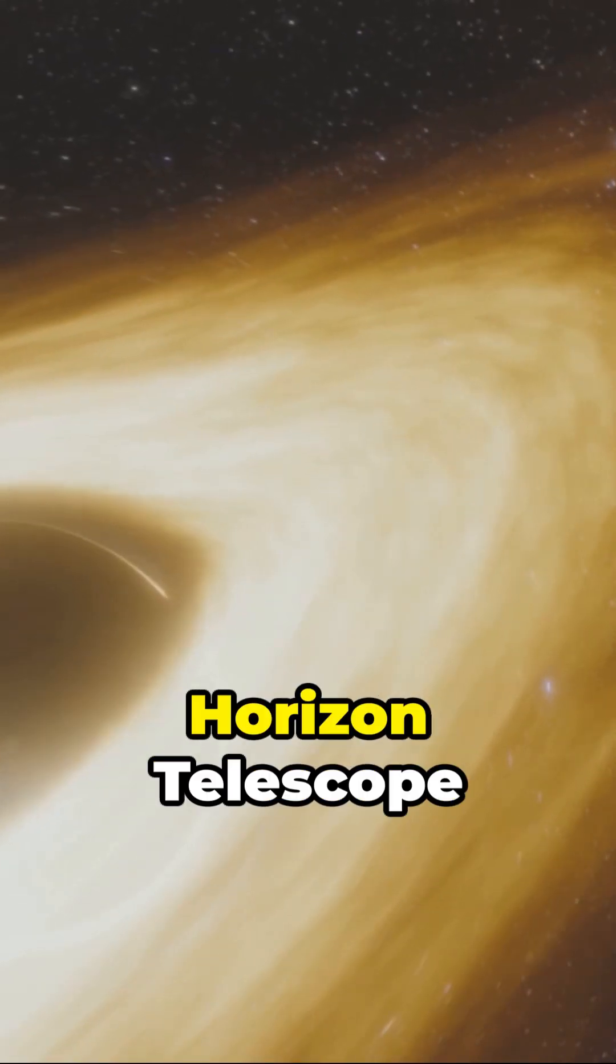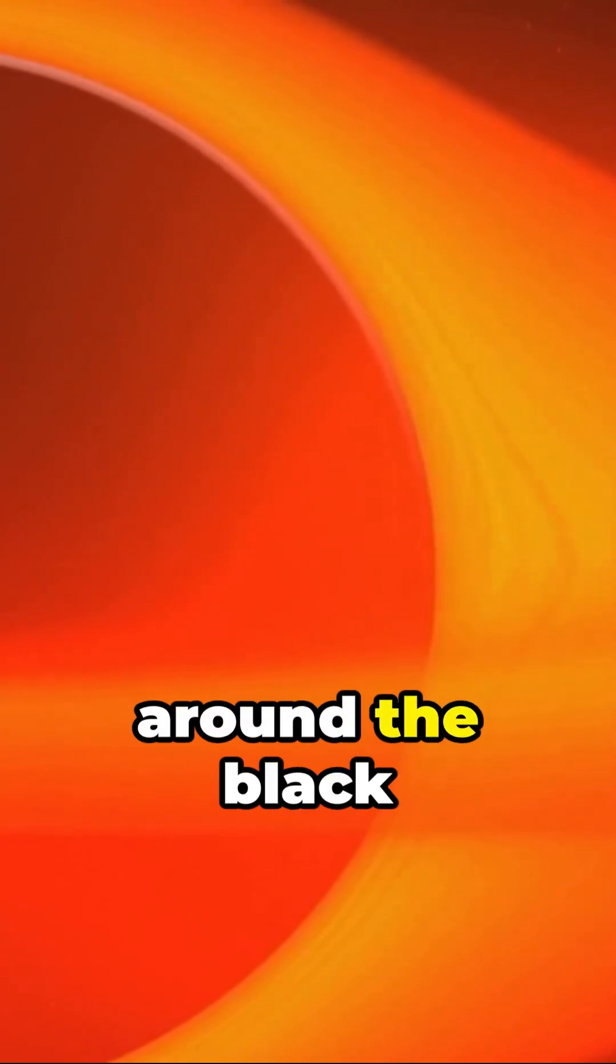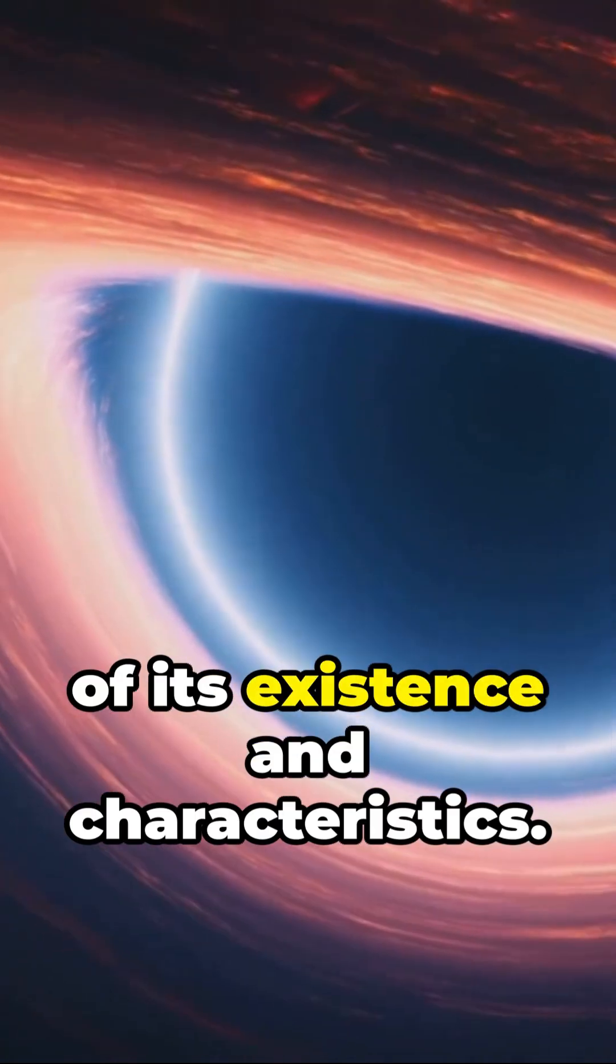In 2019, the Event Horizon Telescope project achieved a historic feat by capturing the first-ever image of a black hole's event horizon. This image, showing a bright gas ring around the black hole, serves as definitive evidence of its existence and characteristics.